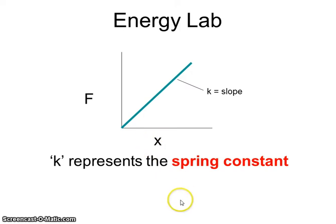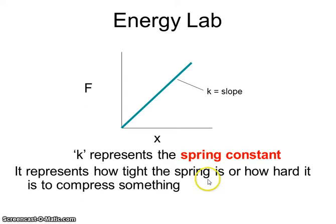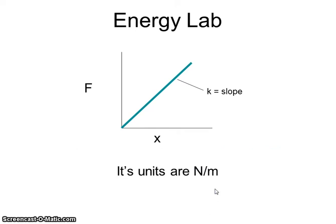So that k represents this thing called the spring constant. So it tells us how tight the spring is or how hard it is to stretch or compress it. The units are newtons per meter.